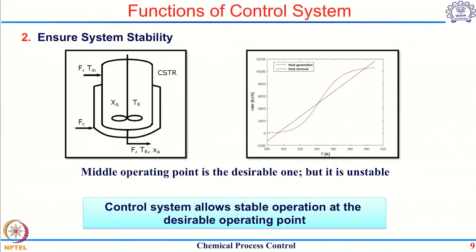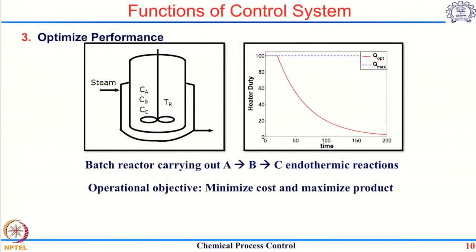Sometimes a control system is also installed to ensure stability of an unstable operating point. Lastly, a process control system can also be installed to optimize the performance of the system. As an example, consider an endothermic batch reactor conducting a consecutive reaction of the form A → B → C, where the product of interest is B. Since it is an endothermic reaction, heat must be provided to the system by passing steam into the jacket. The objective of the operation is to maximize the production of B.